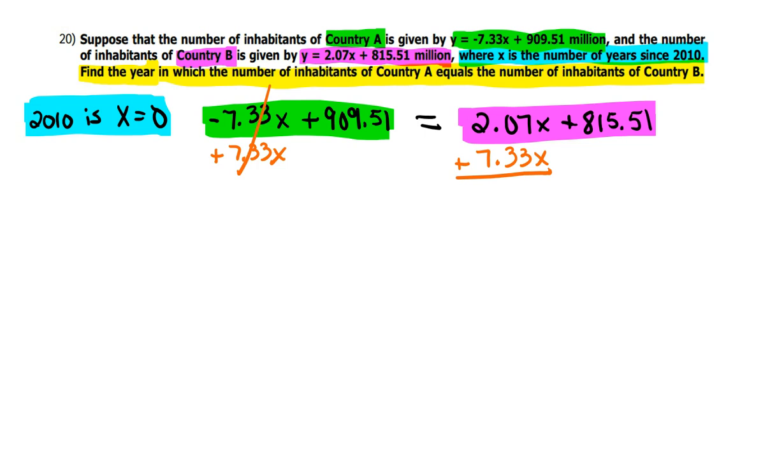But since my X is now on the right, I do not want this 815.51. So I'm going to subtract that off. Cancel him out. But what you do one side, you've got to do the other.